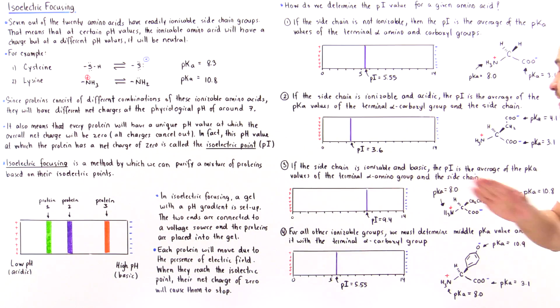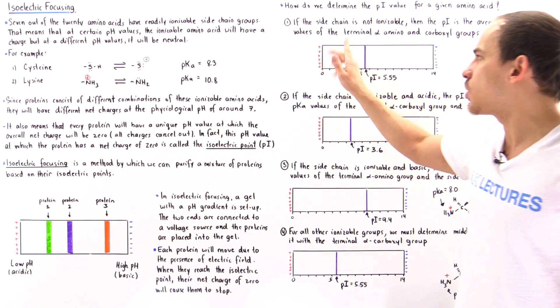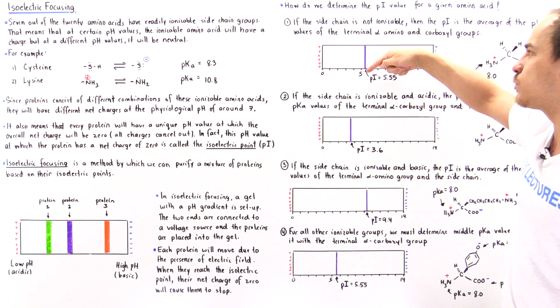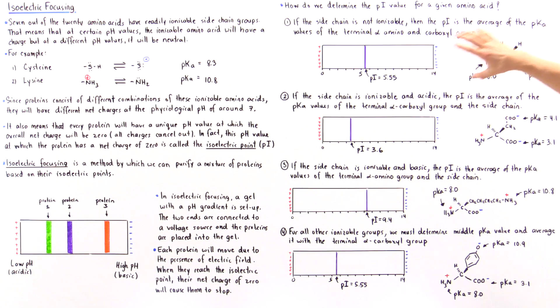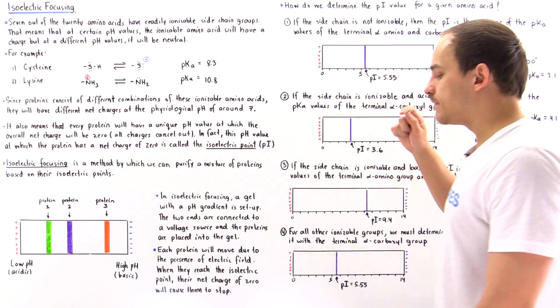The same thing is true for all these other cases. For example, if we take glycine and place it here, it will have a net positive charge so it will move this way until it reaches that point. And if we take glycine and place it here, it will move this way until it reaches that pI value of 5.5.